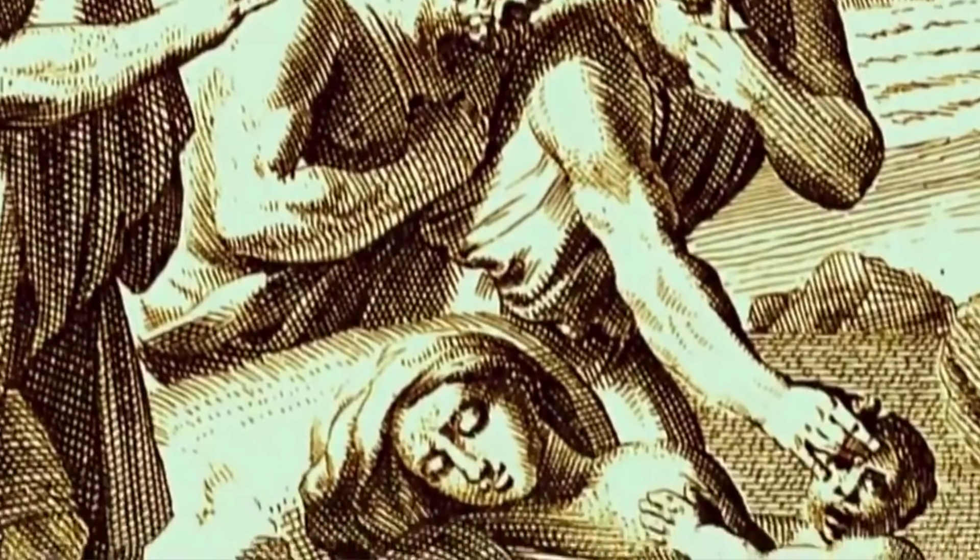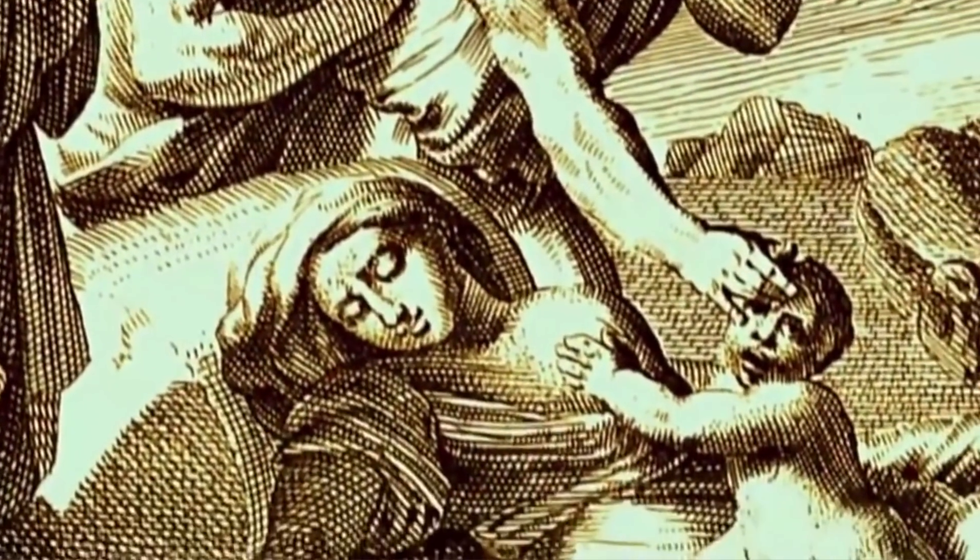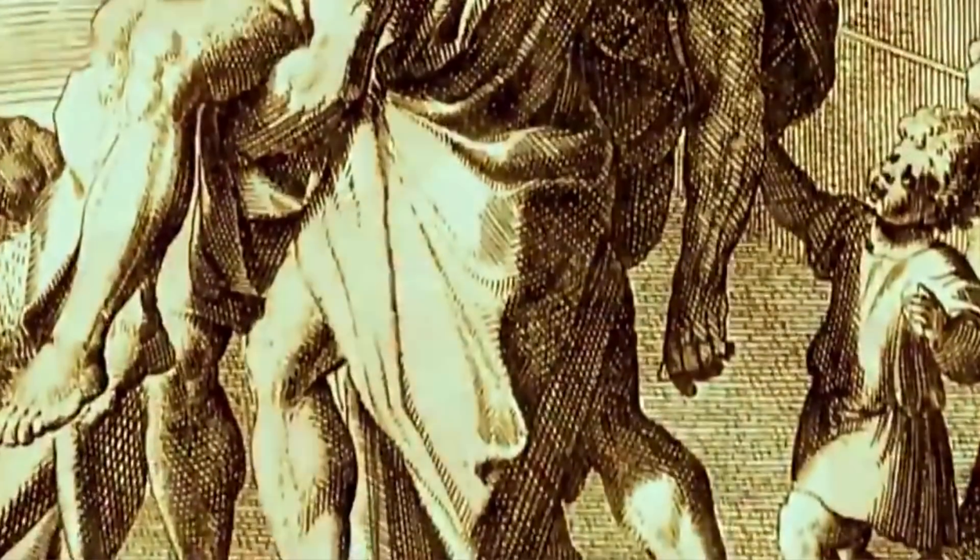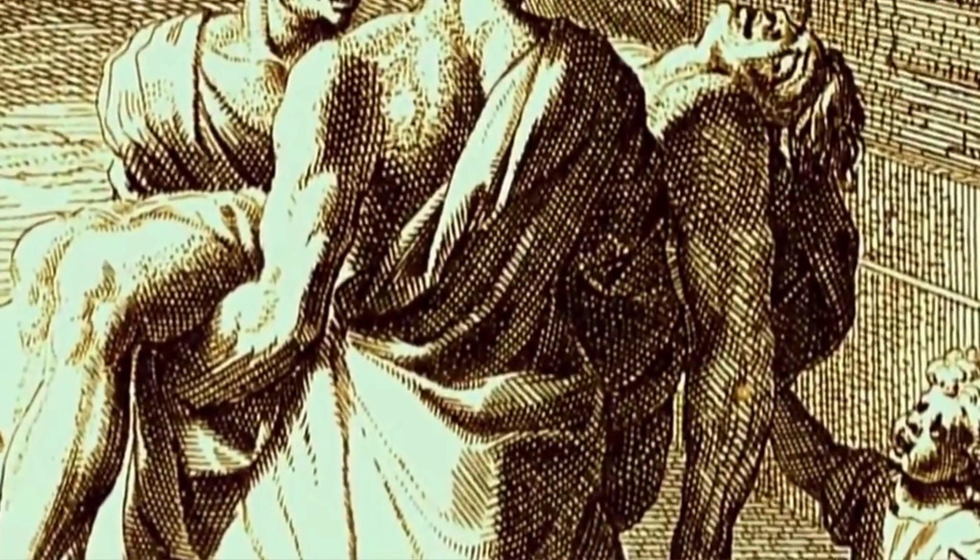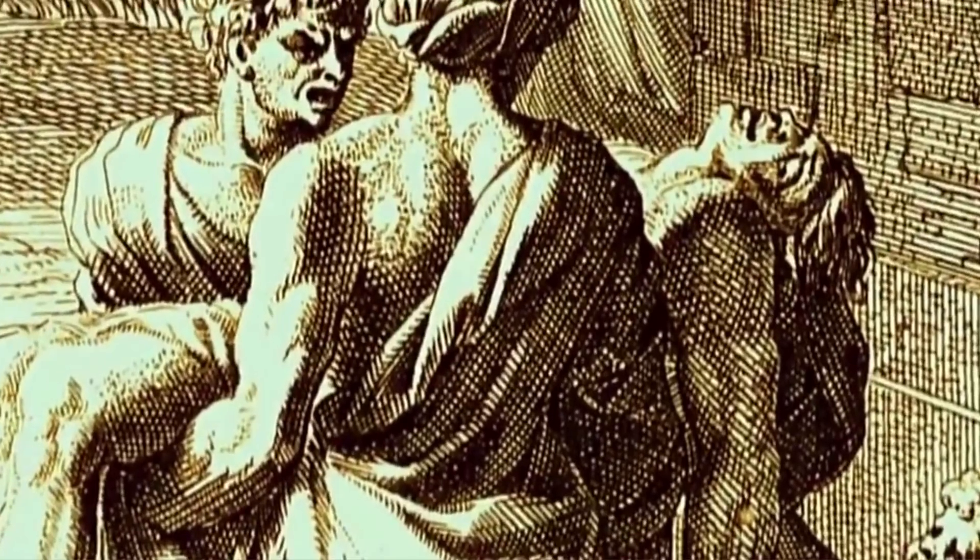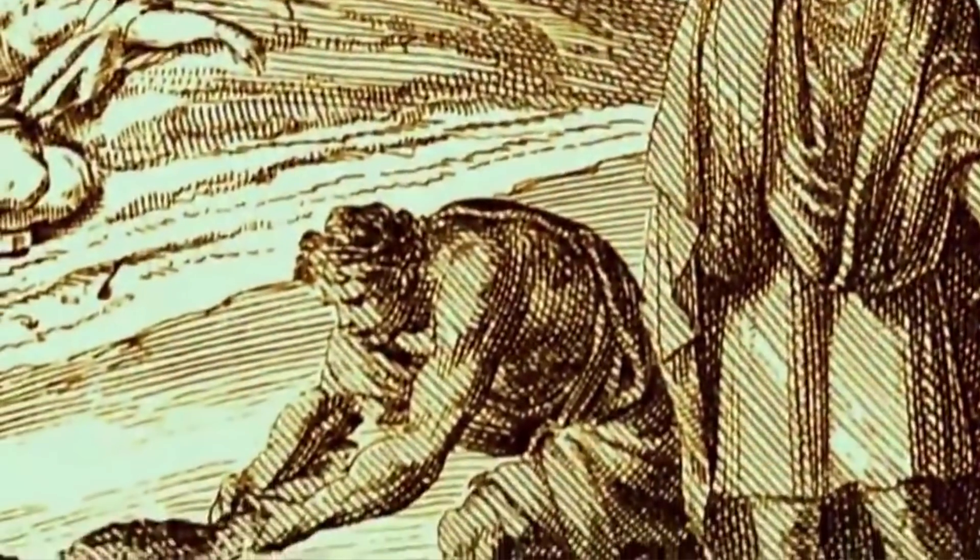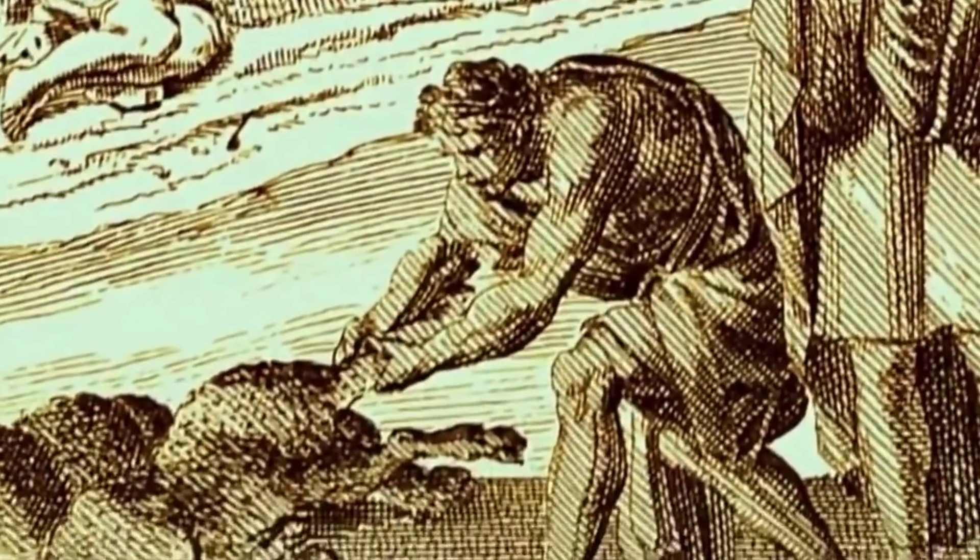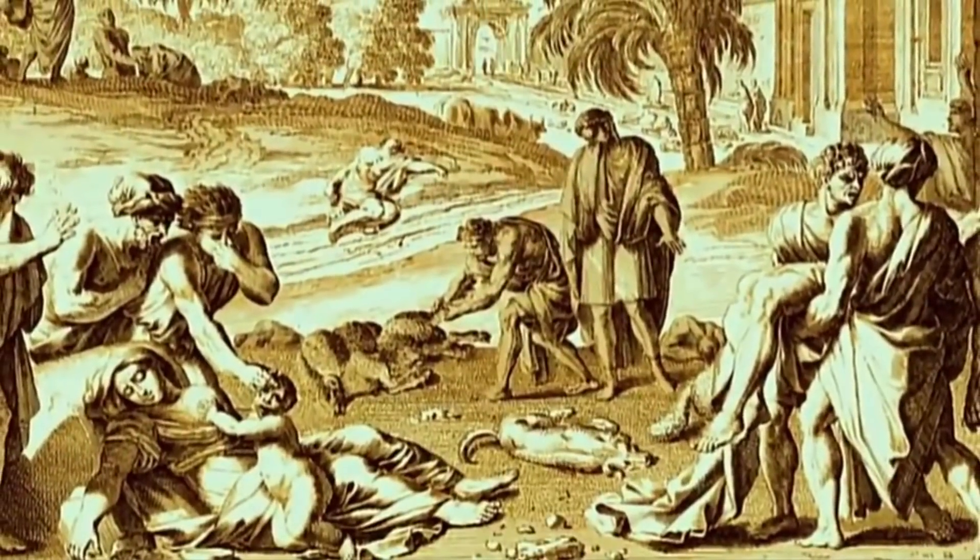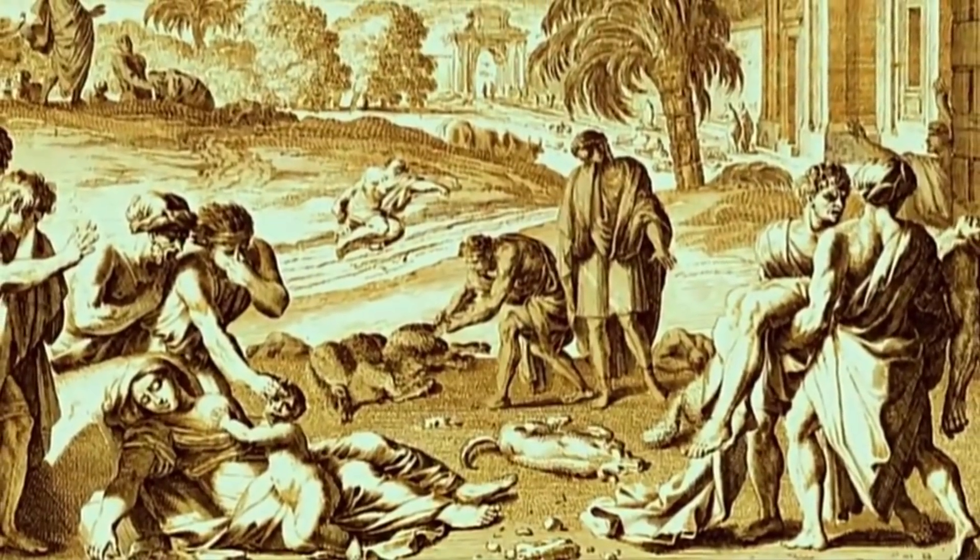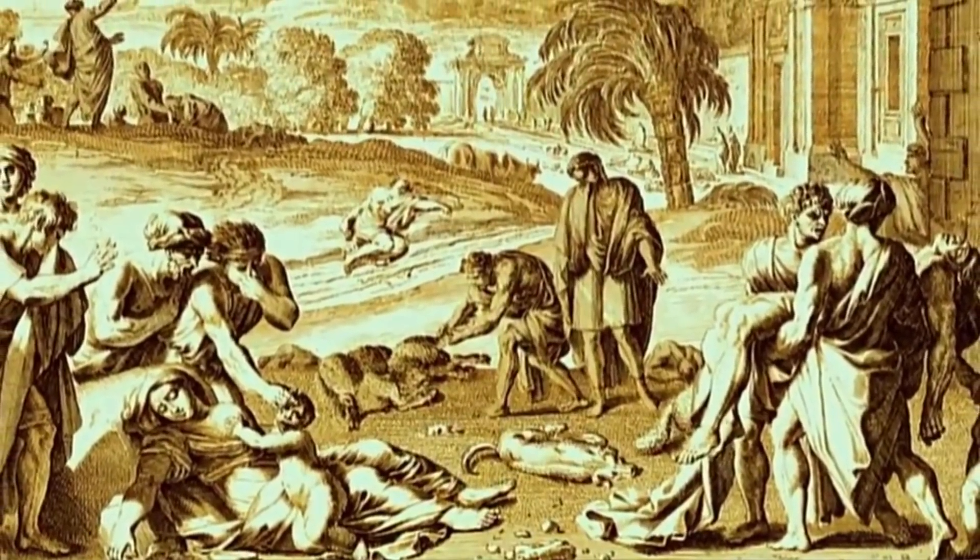3000 yıl öncesine, mesela Mısır'a... 3000 yıl önce veba ilahi bir ceza olarak Mısır halkının üzerine çöktü. Aynı dönemlerde aralarında en ölümcül olanı, siyah veba adını verdikleri salgın Avrupa'yı ölümden kırdı geçirdi.